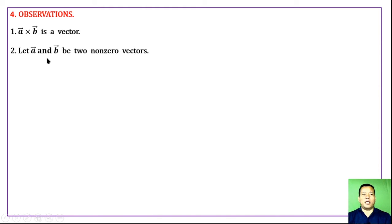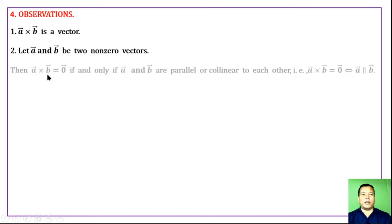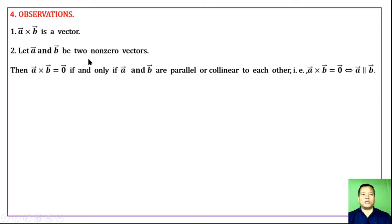Let vector a and vector b be two non-zero vectors. Then a cross b is zero if and only if vector a and vector b are parallel or collinear to each other. That is, if they are collinear, their cross product is zero; conversely, a cross b is zero if and only if vector a is parallel to vector b.